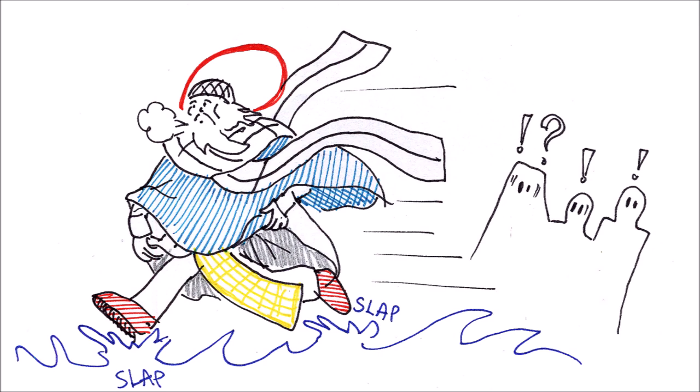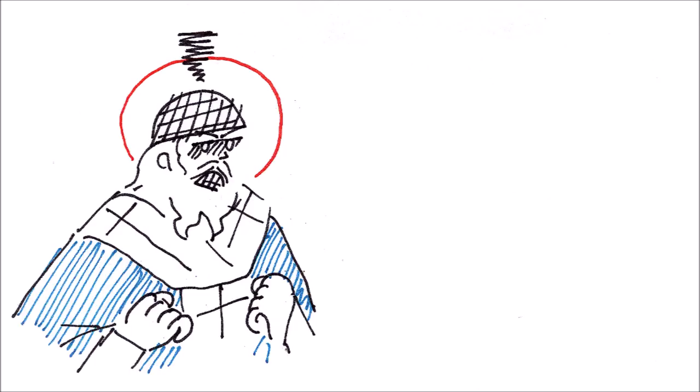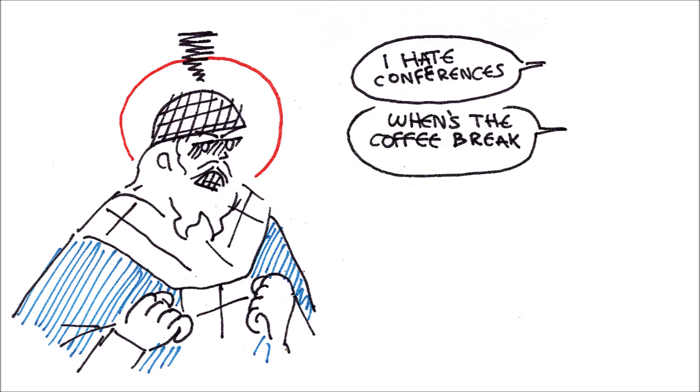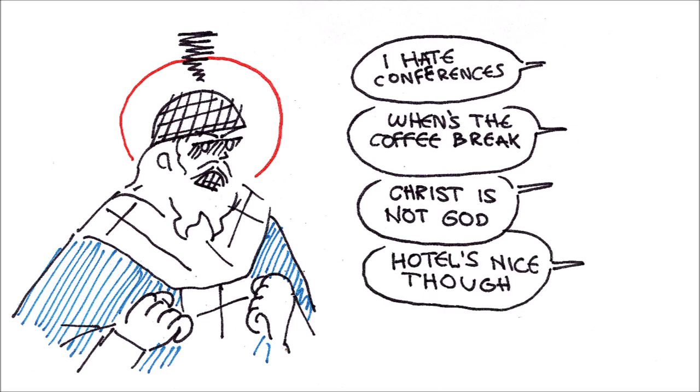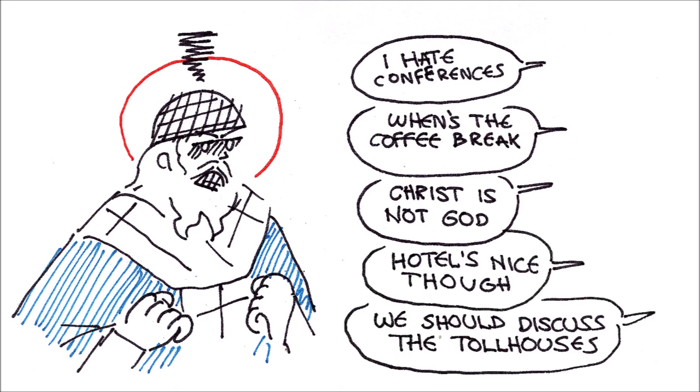who immediately set the innocent man free. Saint Spyridon was in attendance during the First Ecumenical Council, where the heresy of Arius was condemned. There, despite being unlearned, Saint Spyridon put many Arian philosophers to shame, who later testified that, despite their learning in rhetorics, they couldn't outsmart a simple shepherd.